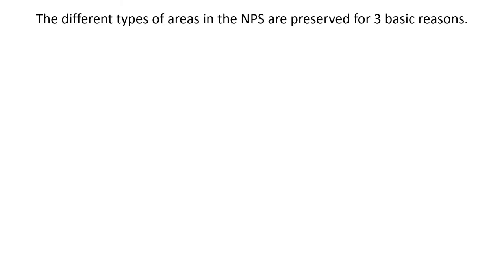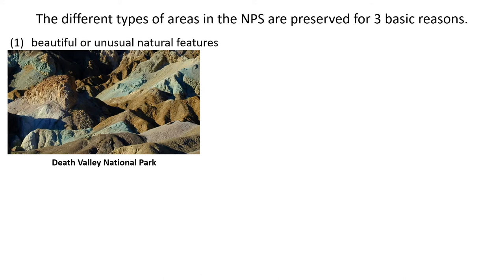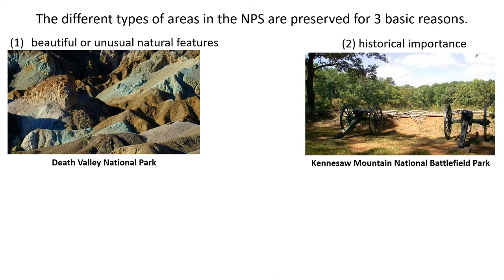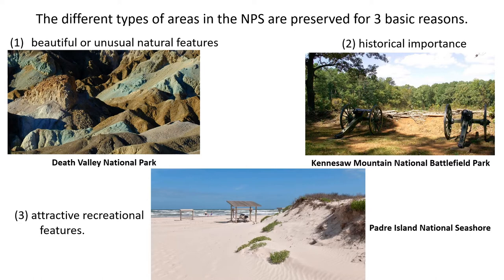The different types of areas in the national park system are preserved for three basic reasons. The first reason is that it has beautiful or unusual natural features — one example would be Death Valley National Park. Another reason is to preserve it for its historic importance; Kennesaw Mountain National Battlefield in Georgia was preserved because of its significance during the Civil War. The third reason is for attractive recreational features, like Padre Island National Seashore. National park system areas can be preserved for one of these reasons, or more than one.